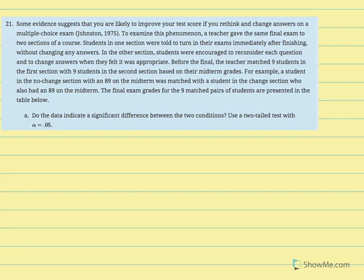A matched subject design is a hybrid between the independent measures t-test and a repeated measures t-test. We have two conditions made up of two different individuals; however, the matched person can be thought of as their twin. The midterm grade is the characteristic held constant across conditions. We can treat matched pairs as though they're the same individual when calculating our t-statistic.